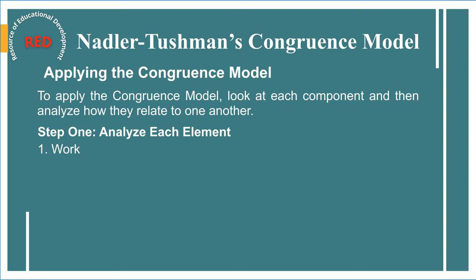Step one, element two — people: look at who interacts to get these tasks done, including bosses, peers, and external stakeholders. Identify the skills, knowledge, experience, and education they possess. Explore how they like to be compensated, rewarded, and recognized for their work. Also consider how committed they are to the organization and what career progression expectations they have.